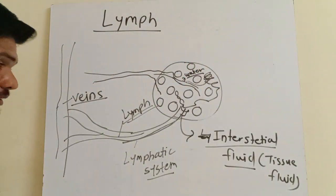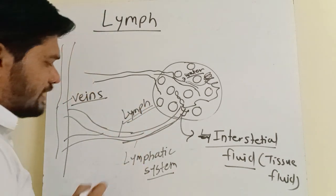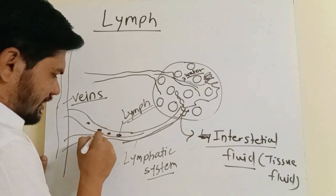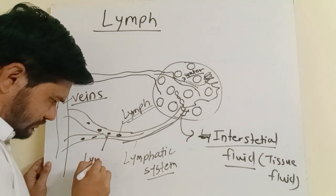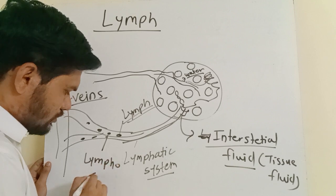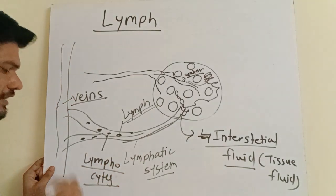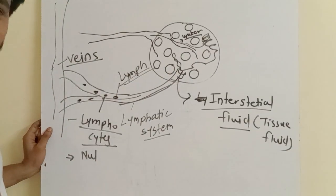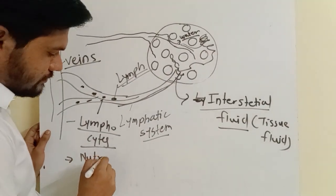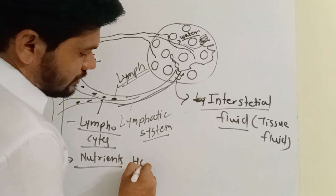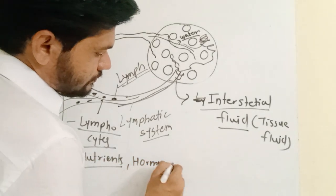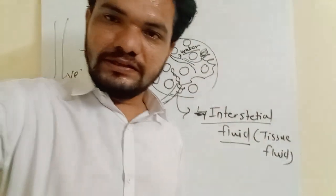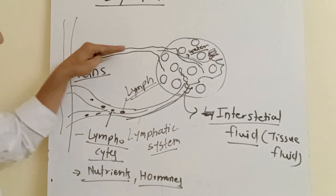Lymph contains specialized cells of the immune system called lymphocytes. Along with lymphocytes, nutrients and hormones are also present in the lymph.